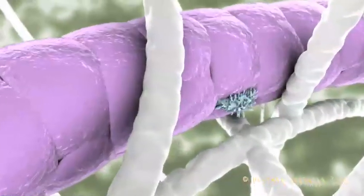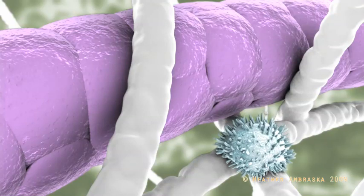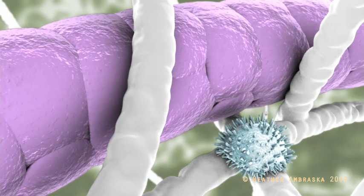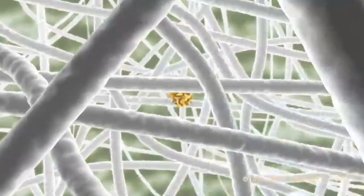Once in the lymph node, the T-cell faces the monumental task of finding a dendritic cell that is presenting the antigen. Microscopic mechanisms exist to help increase the odds.